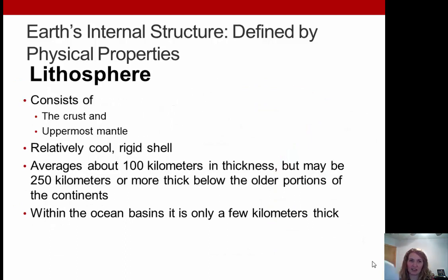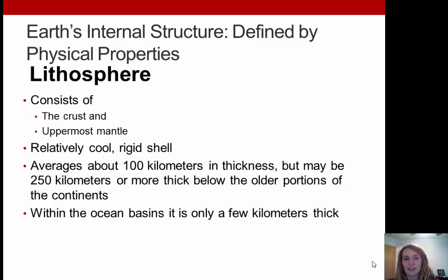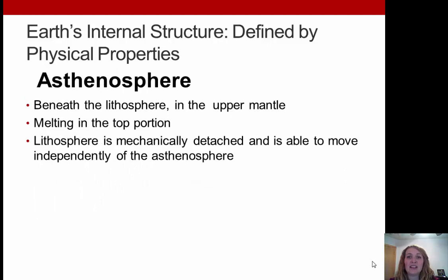The first physical layer is the lithosphere, consisting of the crust and the uppermost part of the mantle — a relatively cool, rigid shell. It averages about 100 kilometers thick, but can reach up to 250 kilometers. Within ocean basins it can be only a few kilometers thick — so it varies by location. Below that is the asthenosphere, right beneath the lithosphere in the upper mantle. There is melting in the top part of this layer, and the lithosphere is mechanically detached and able to move independently of the asthenosphere.